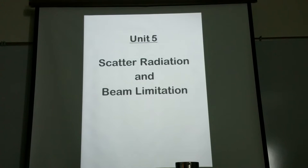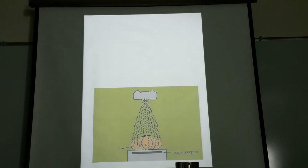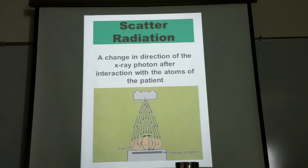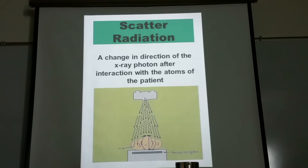If we can limit — control — the size of the x-ray beam, not only can we control the size of the primary beam, but also what's produced once it interacts with the patient. The primary beam interacts with the patient, and what's left is your remnant radiation. That includes both primary radiation and scatter radiation. So if I can control the size of my x-ray beam, I'm also controlling the size of the scatter radiation being produced.